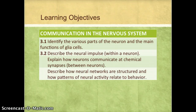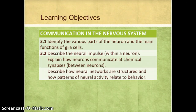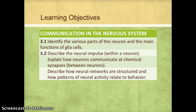In this video, we will be covering part of communication in the nervous system. We're going to start by looking at the parts of the nervous system, the way a neuron processes a signal both within the neuron and between the neurons, and how neural networks are structured.